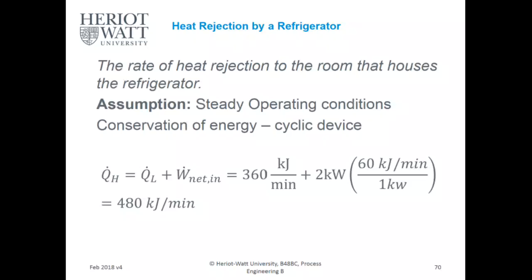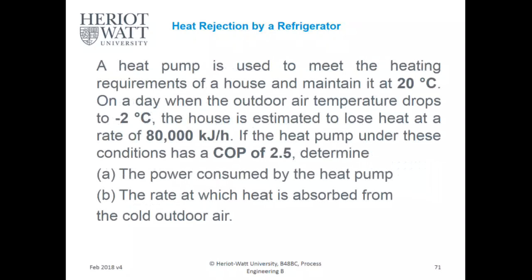If you live in a small house with a big fridge full of food, you could actually heat your house using your fridge. Now let's try another question. A heat pump is used to meet the heating requirements of a house and maintain it at 20 degrees Celsius on a day when the outdoor temperature drops to 2 degrees. The house loses heat at 80 kilojoules per hour, and the heat pump has a COP of 2.5. Determine the power consumed and the rate at which heat is absorbed from the cold outdoors.